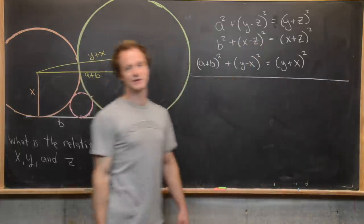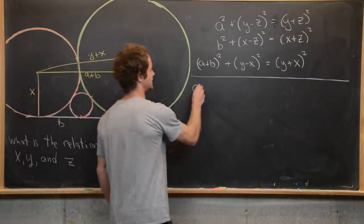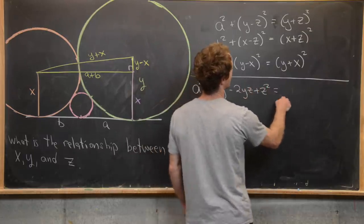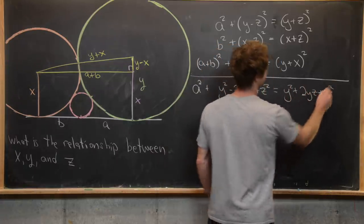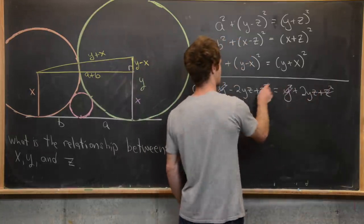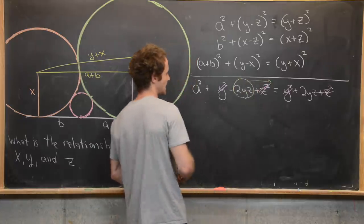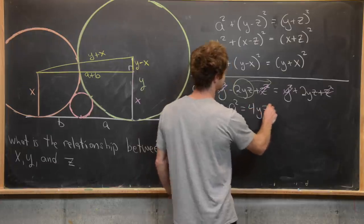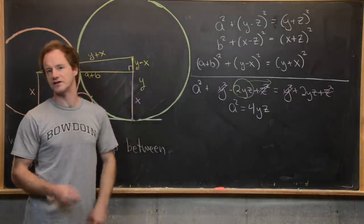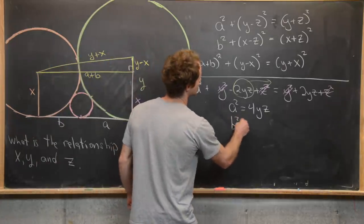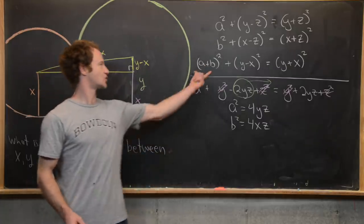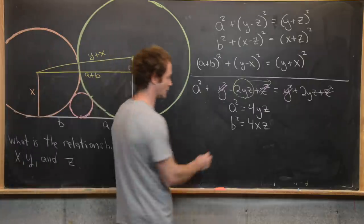Expanding and simplifying each of the three equations gives us: a² = 4YZ, b² = 4XZ, and (a + b)² = 4XY. These three results relate the horizontal distances a and b to the three radii X, Y, and Z.